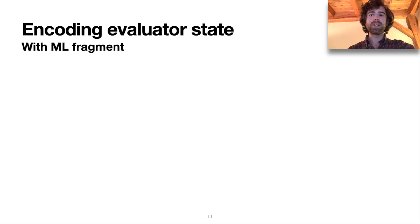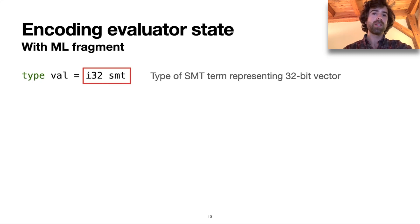So we have our graph representation. As our evaluator traverses the graph, it's going to need to maintain some state. And we'll use the ML fragment of Formulog to define this state. We're going to say that values for our evaluator are terms of type I32SMT, which is the Formulog type for a 32-bit vector valued SMT term. So essentially a symbolic bit vector.